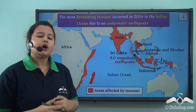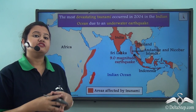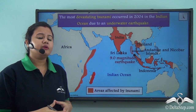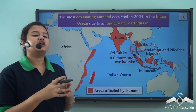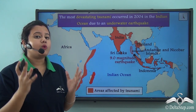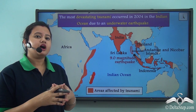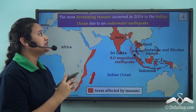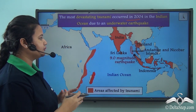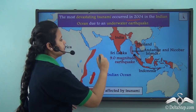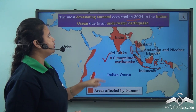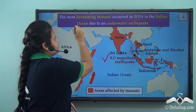Unlike ordinary waves, the waves produced during a tsunami are gigantic and very disastrous. One such catastrophic tsunami occurred in December 2004, when an earthquake of magnitude 9.0 struck the floor of the Indian Ocean.